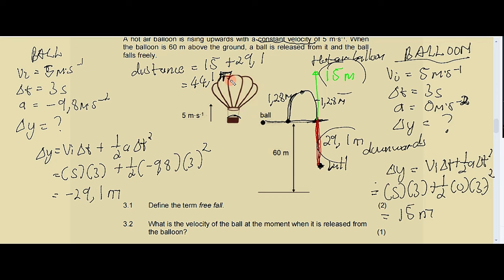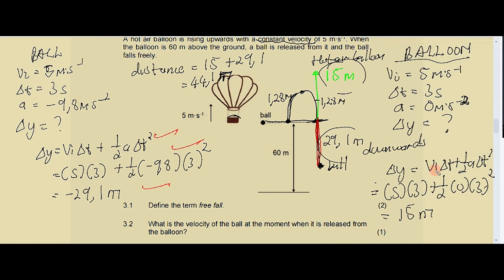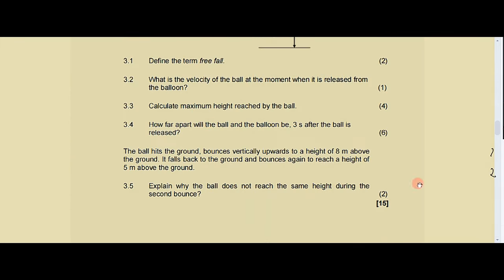That's how you tackle that question — six marks, two formulas. For mark allocation: a mark for each substitution and each answer, and one mark for the final addition. Don't panic when you see questions worth six or seven marks; it just means applying more than one formula. Let's proceed — we have a statement: the ball hits the ground, bounces vertically upward to a height of eight meters, falls back to the ground, and bounces again to reach five meters above the ground.